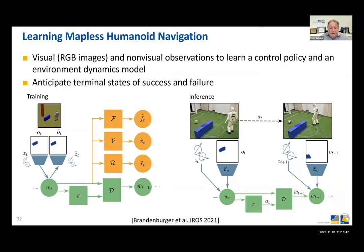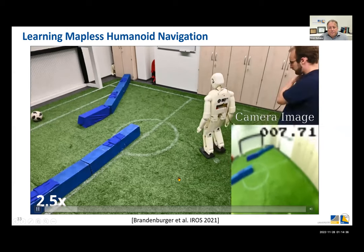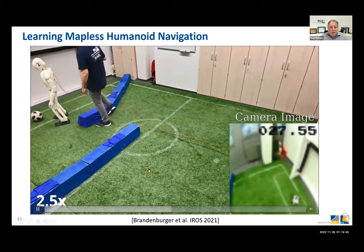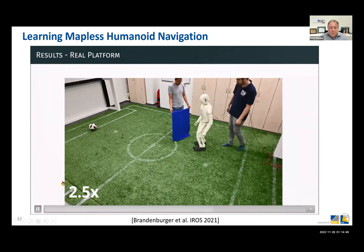Brandenburger in his master's thesis looked at deep learning-based navigation that takes images as input and learns to encode them in an abstract state space. This approach extends Dreamer, and also takes into account balance measurements, predicts how the state would evolve, and predicts reward and value. During inference, this generates navigation so the robot walks while avoiding obstacles towards a goal — not just stationary objects but also dynamic obstacles.